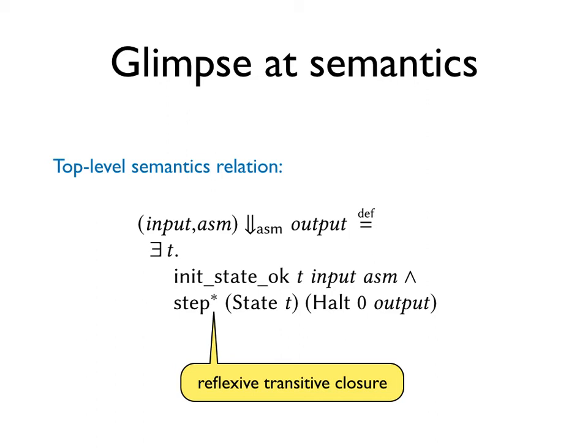The top level semantic judgment relates input and assembly program with an output. If there is a way to take some number of step transitions from a good initial state to a final hold state such that the output is produced.